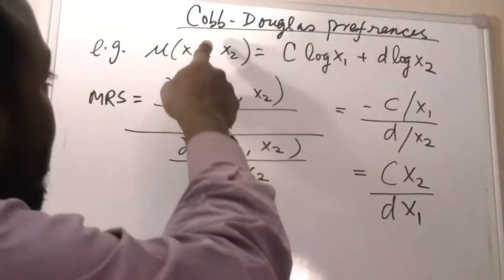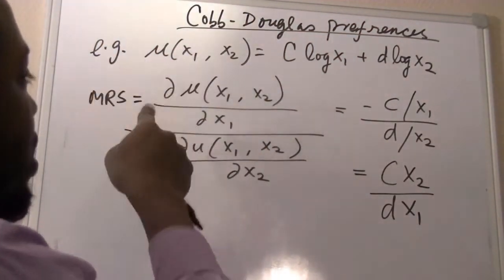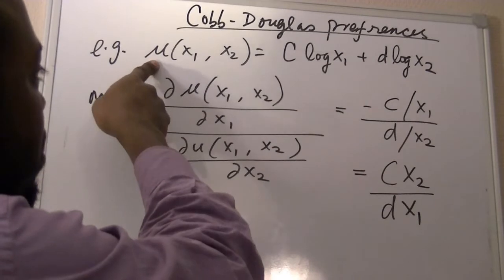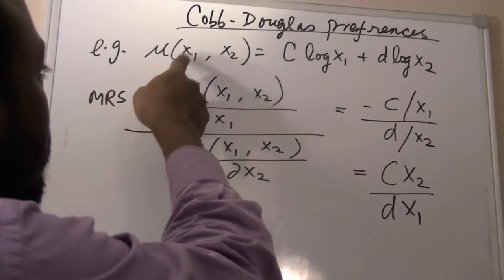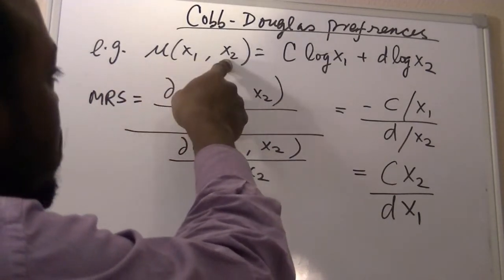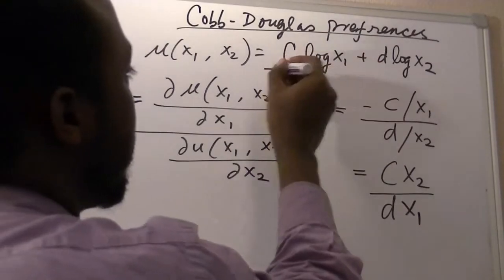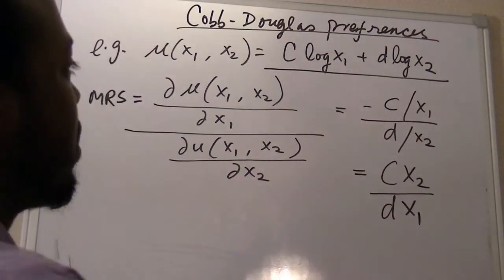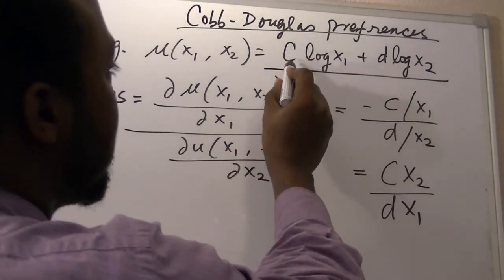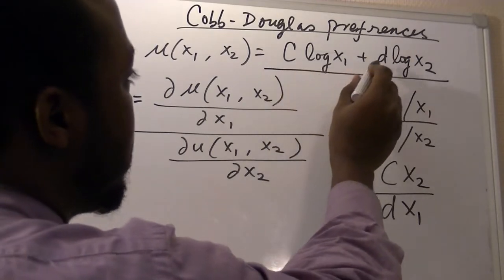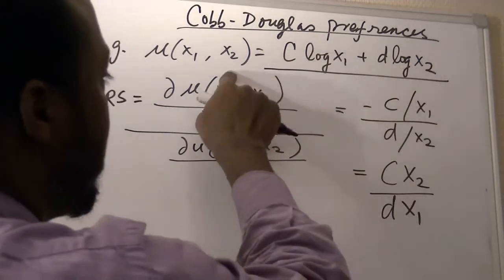If we take this example, this utility is a function of two goods, u of x1 and x2, and let's take now this logarithmic representation. Then c times log of x1 plus d times log of x2 is what we get.